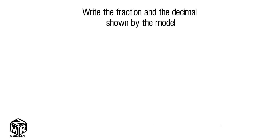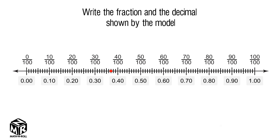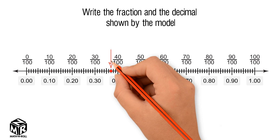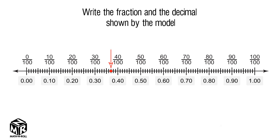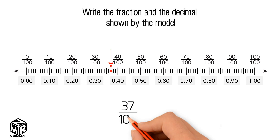Let's try another example. Write the fraction and the decimal shown by the model. We have a number line that has been divided into one hundred equal pieces. Each piece represents one hundredth. To find the red dot, we start from thirty hundredths because it's easier than starting from zero. One by one we add one hundredth to thirty hundredths until we reach the red dot. We get thirty-seven hundredths. We can write thirty-seven hundredths as a fraction and as a decimal.